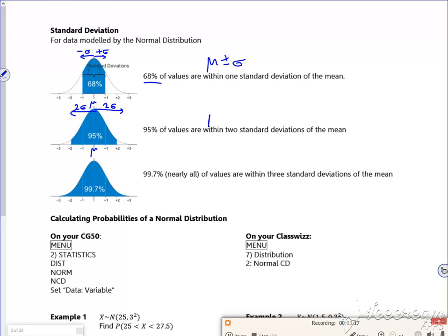Then it's mu plus or minus two sigmas is 95% of your values. So 95% of your data would lie between two standard deviations.